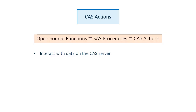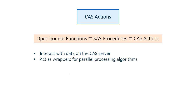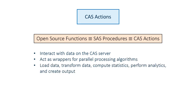We interact with the CAS server through CAS actions, which are individual processing tasks that we submit to the CAS server. They are essentially wrappers for parallel processing algorithms, and they can load data, transform data, compute statistics, perform analytics, and create output.